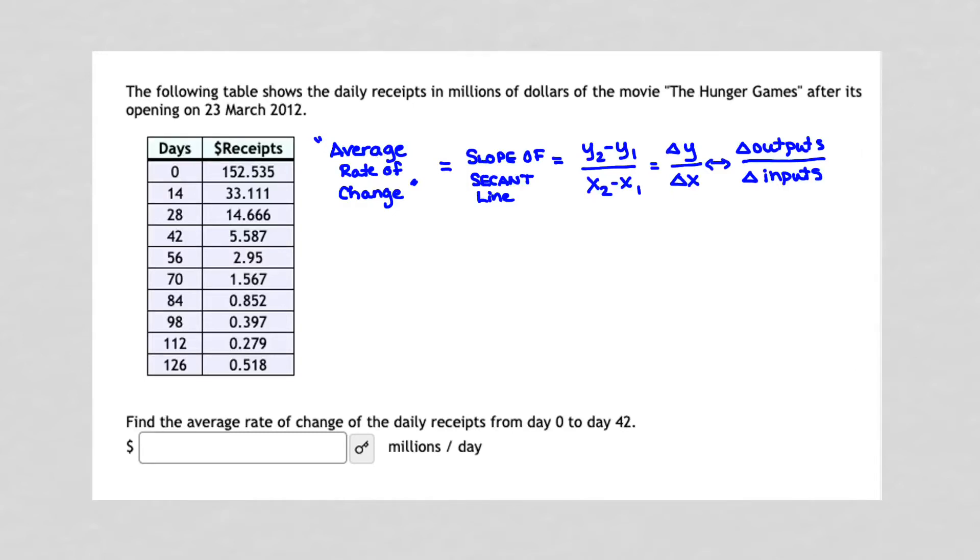So the first point comes from day zero. In day zero, I have a point zero comma 152.535 million dollars. So that's my first point. My second point comes from day 42 past the 23rd of March. And so that point is 42 comma 5.587. And I'm reading this straight from my table.